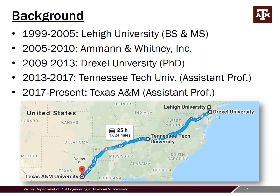Quickly, a little background on myself. I started my career at Lehigh University, received my bachelor's and master's degree in 2005. After that I started work at an engineering consulting firm called Amman & Whitney — I was there for about five years, mostly working on bridge design related projects. Around 2009 I started part-time and then went full-time for my doctorate at Drexel University. When I graduated, I went back to academia and worked as assistant professor at Tennessee Tech for four years, and then in 2017 accepted a position as assistant professor at Texas A&M in the Civil Engineering Department. All total I have roughly 15 years of bridge related research and practical design experience.